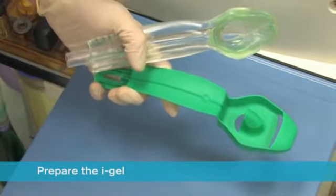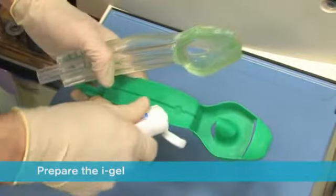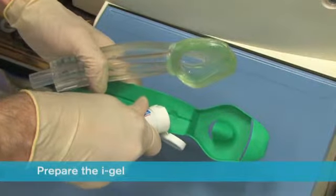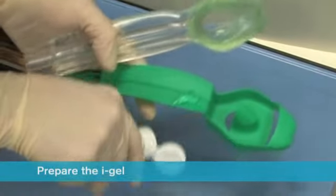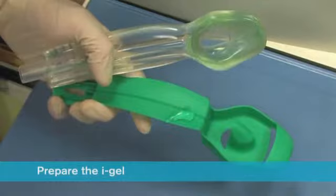Place a small bolus of water-based lubricant, such as KY Jelly, onto the middle of the smooth surface of the cradle in preparation for lubrication. Do not use silicon-based lubricants.